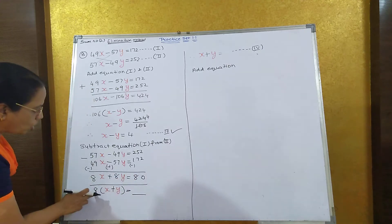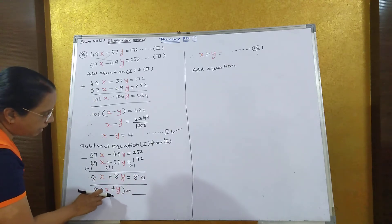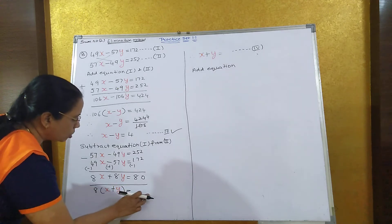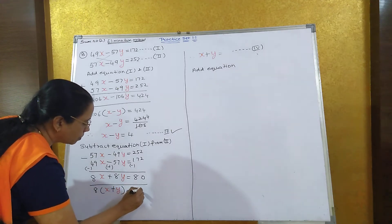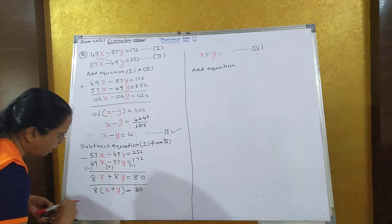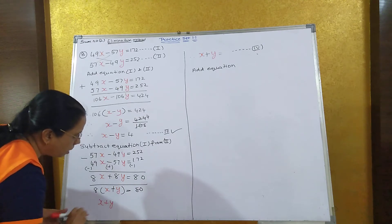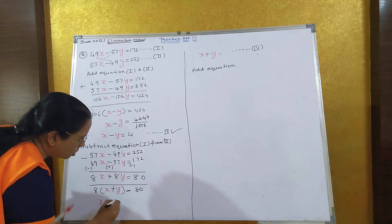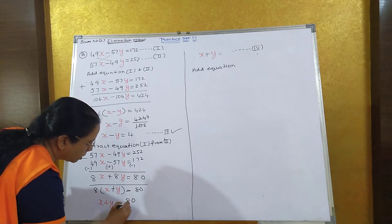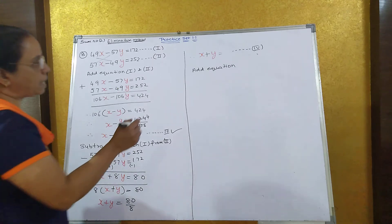When you subtract this you get 80. Now take 8 common because 8 is common in both of them. 8 common and x plus y is equal to 80. Now take the 8 to the other side. x plus y is equal to 80 upon 8. When I divide 80 by 8, I get 10. So x plus y is equal to 10.